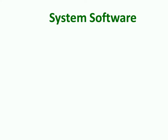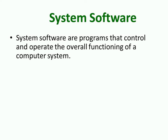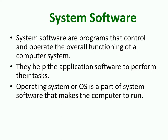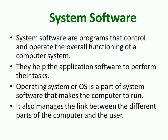System Software are programs that control and operate the overall functioning of a computer system. They help the application software to perform their tasks. Operating System, or OS, is a part of System Software that makes the computer run. It also manages the link between the different parts of the computer and the user.